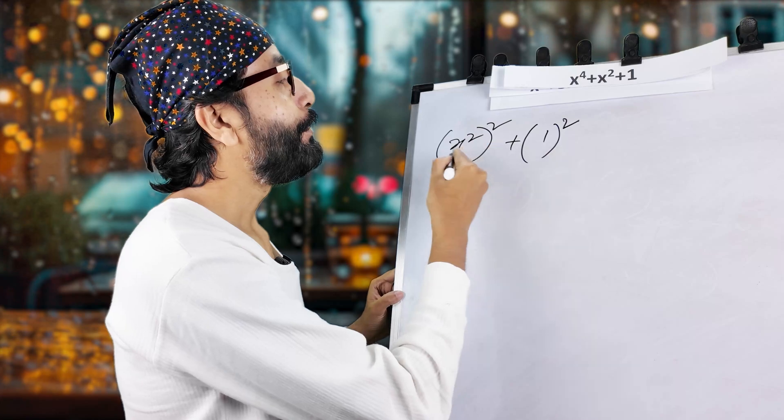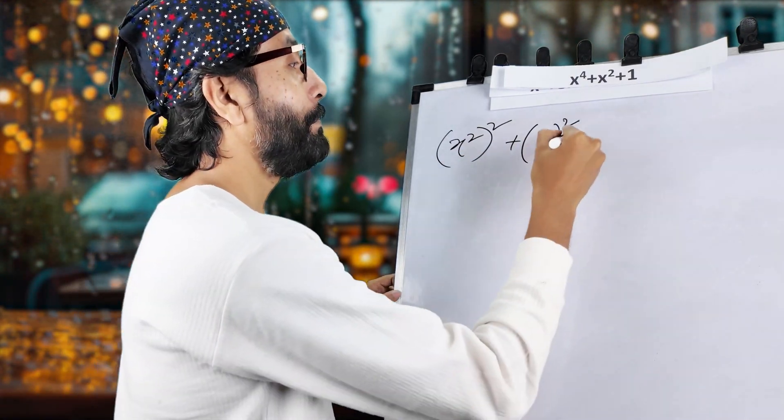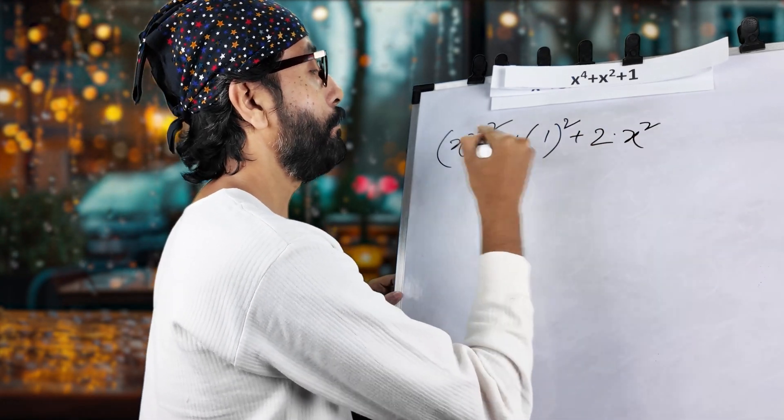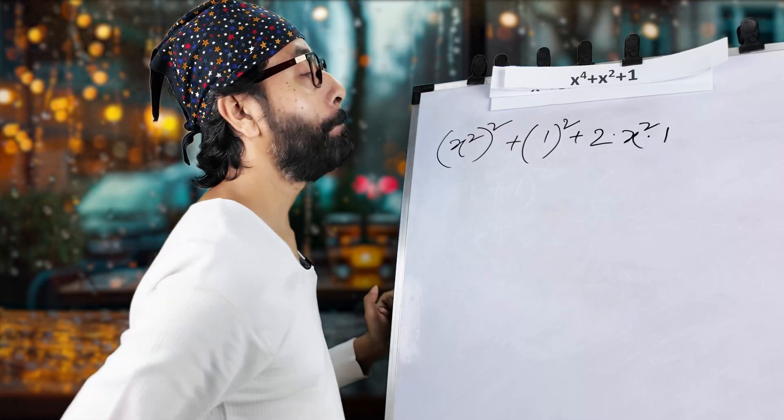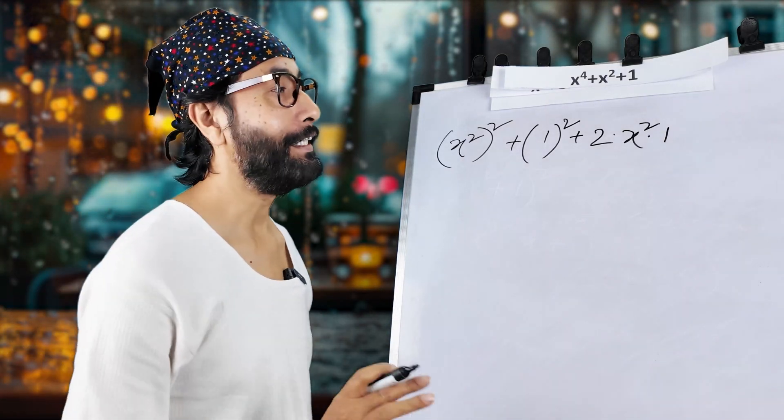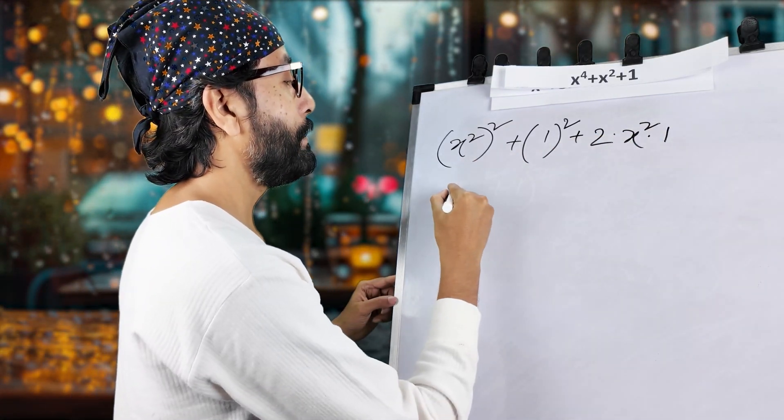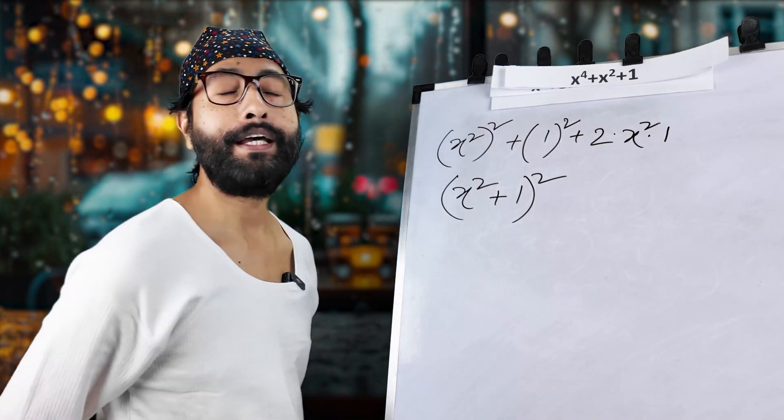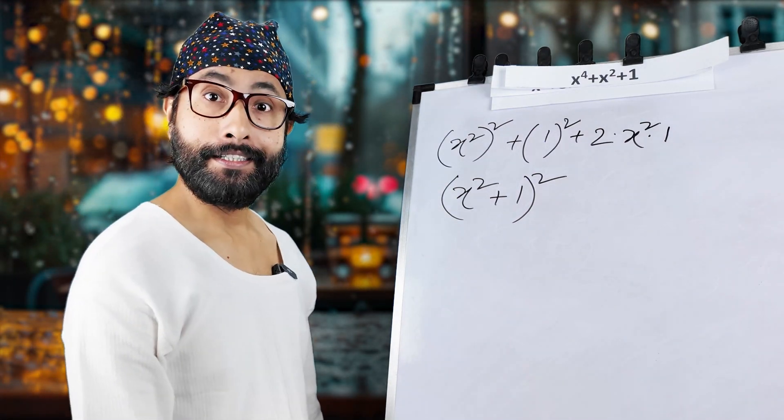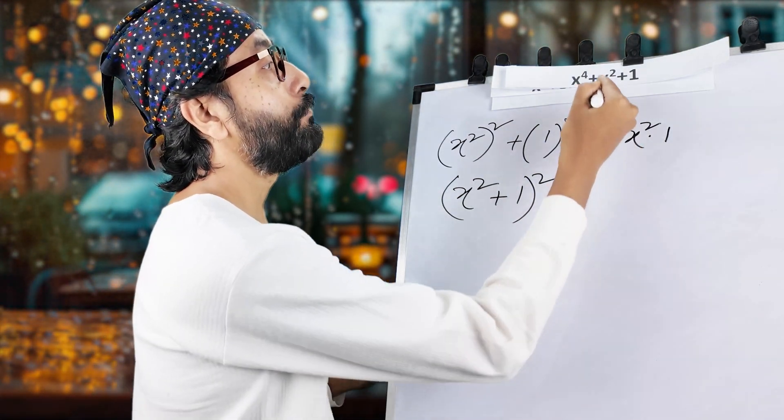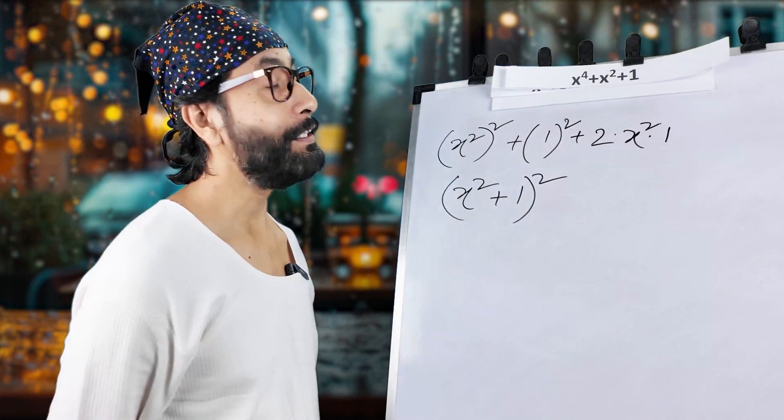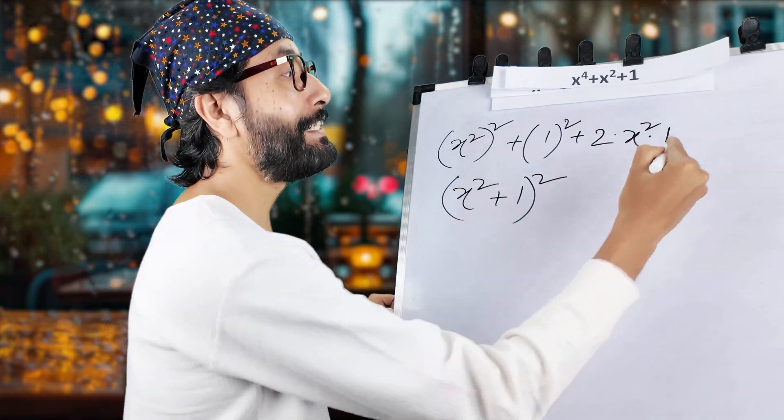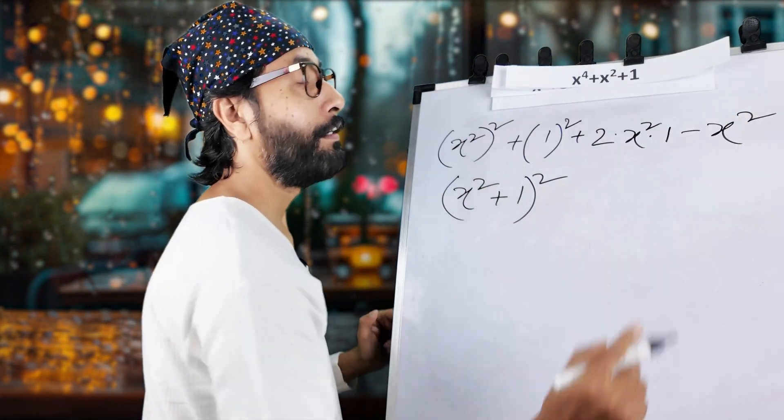Right? Now, we have to find 2ab. This is a square. This is b square initially. So, we have to find 2ab. What is 2ab? Plus 2 into this is our first a and this is our b. Initial ab. Right? So, this becomes x square plus 1 whole square. Make sense? But, we have taken extra x square because it was 1. x square means 1x square. Right? We have taken twice. So, we have to subtract that extra x square.